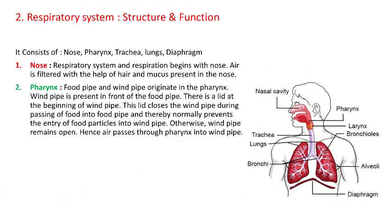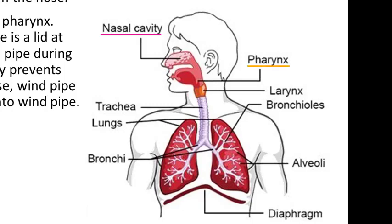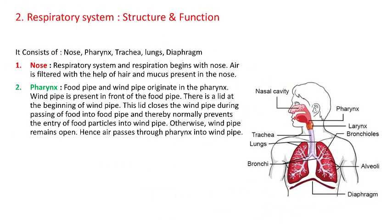The respiratory system consists of the nose, pharynx, trachea, lungs, and diaphragm. Air enters into the body through the openings of the nose known as nostrils. The nasal passage is lined with fine hair which helps to filter the air by trapping dust molecules or microbes. There is also a mucus lining which traps dust to facilitate smooth flow of air.